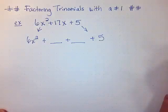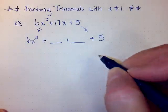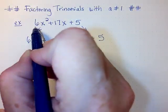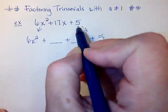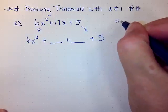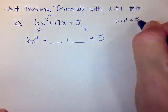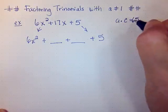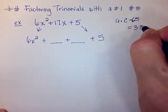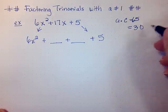Our next step is to figure out what is going in these two blanks. We want to multiply a, which in this case is 6, times c, which in this case is 5. So a times c is 6 times 5, and that's going to be 30.